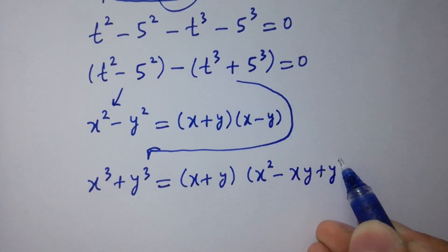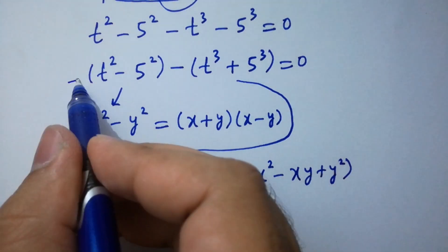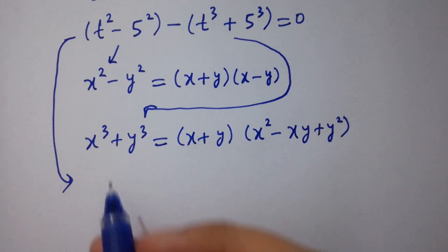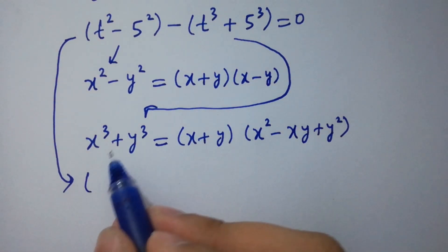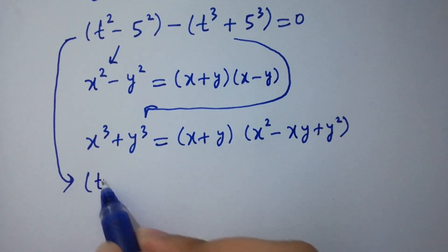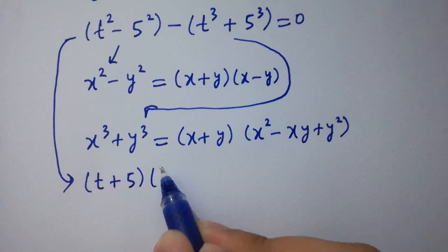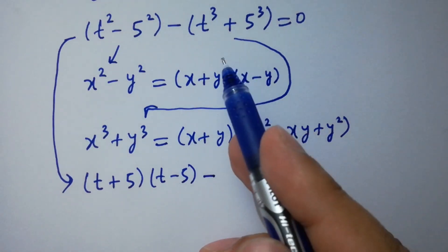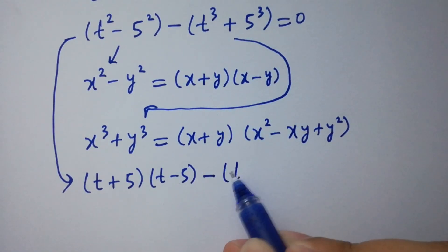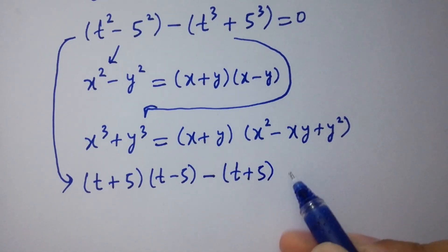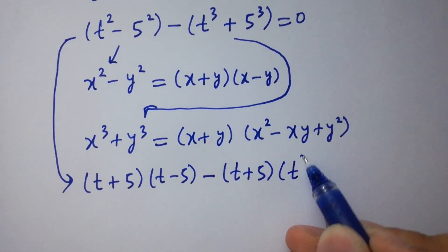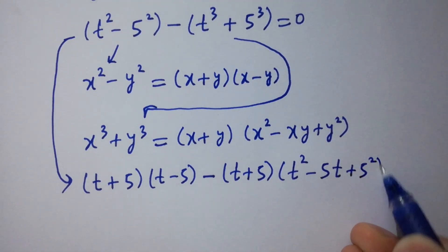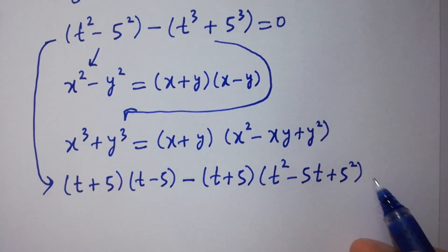Applying these formulas: t squared minus 5 squared becomes t plus 5 times t minus 5, and t cubed plus 5 cubed becomes t plus 5 times t squared minus 5t plus 25, equal to 0.